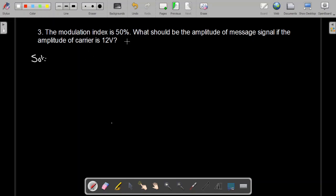Problem number 3 states that the modulation index is 50 percent. So we have mu is equal to 0.5. What should be the amplitude of the message signal if the amplitude of the carrier is 12 volt?